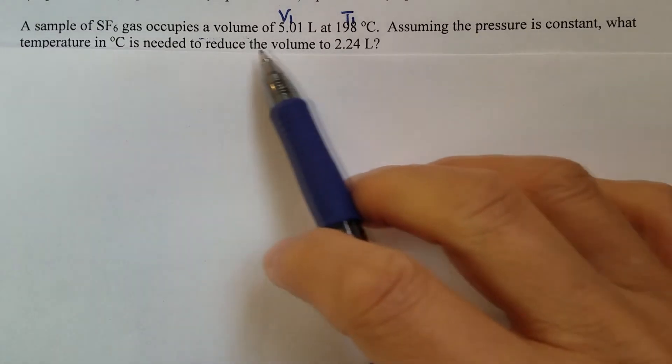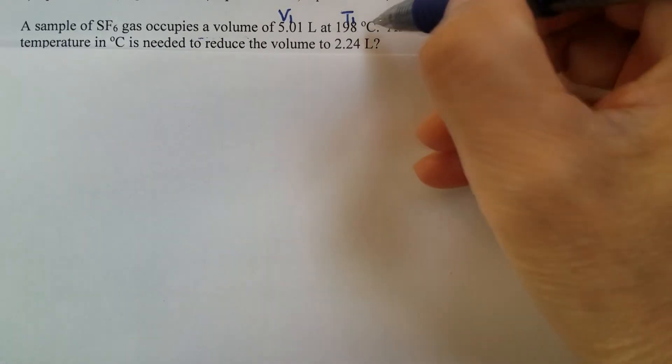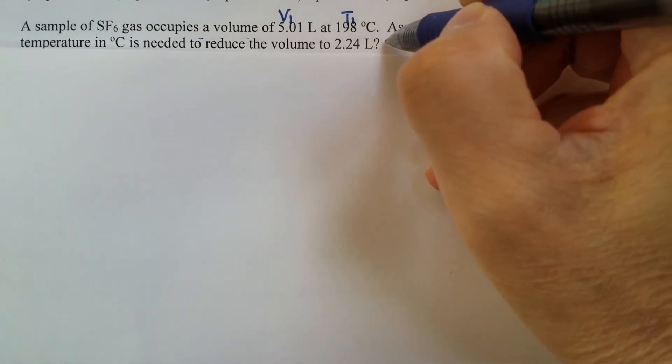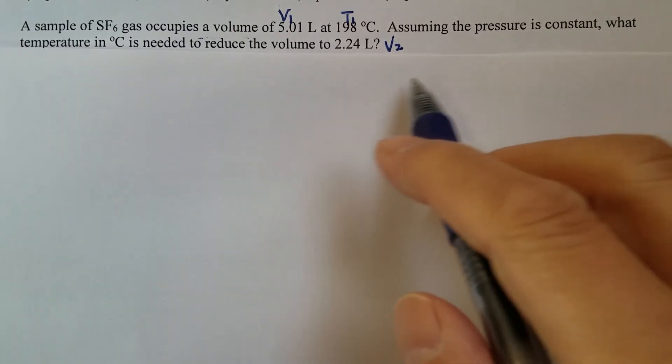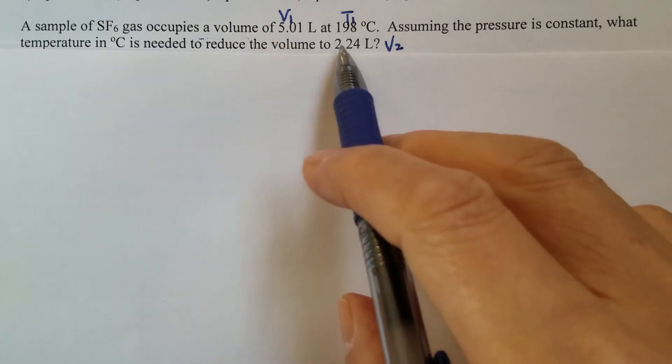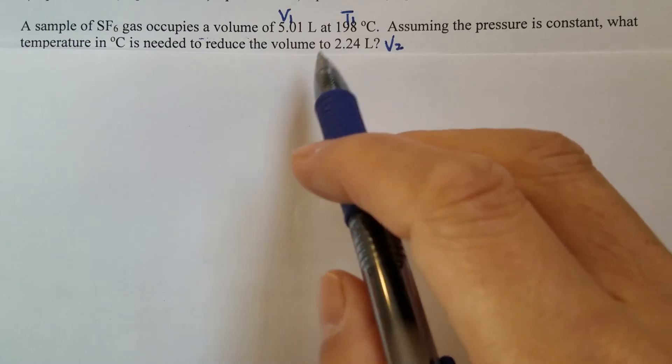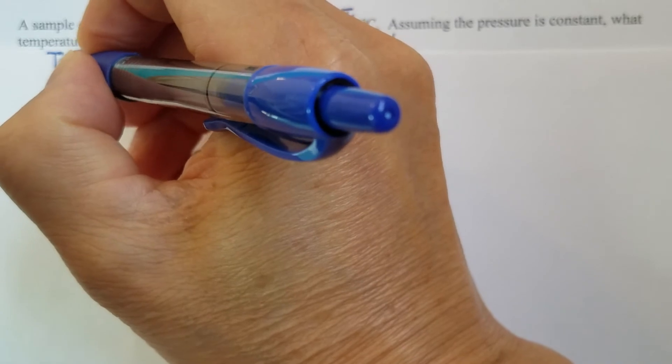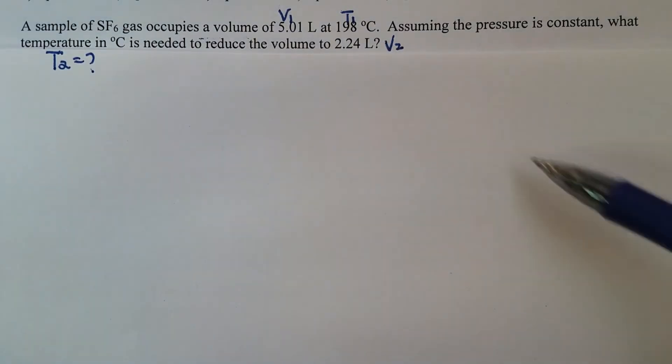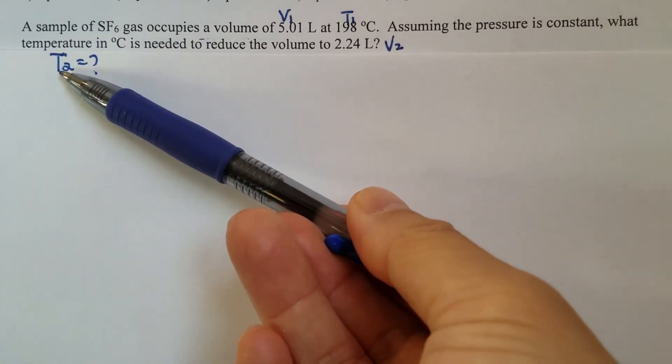And now the volume is reduced to 2.24 liters. That's V2. In order to reduce the volume to 2.24 liters from 5.01 liters, what temperature is required? T2. So we know three quantities and we need to find out the quantity for T2.